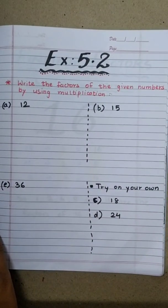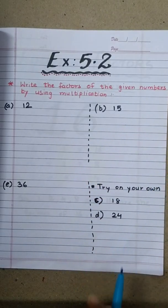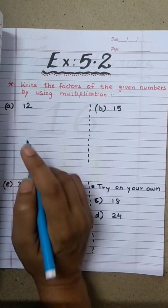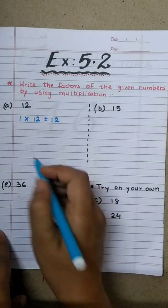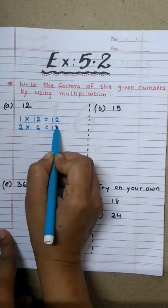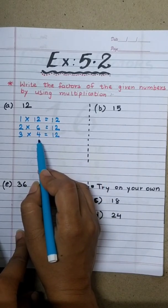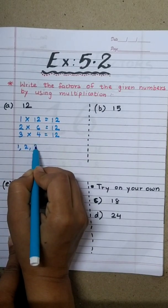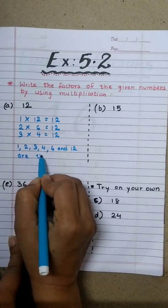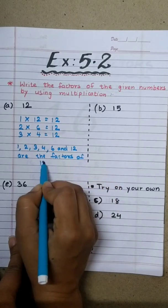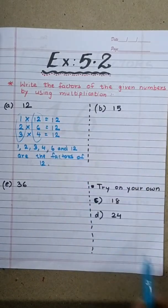Now let's move to Exercise 5.2. First heading: write the factors of the given numbers by using multiplication method. Let's start. If we have to find the factors of 12, we start with 1 — 1 twelve is 12. Then going to 2 — 2 sixes are 12. Then 3 — 3 fours are 12. Now 4 is over here, so we don't need to count further. So, 1, 2, 3, 4, 6 and 12 are the factors of 12.